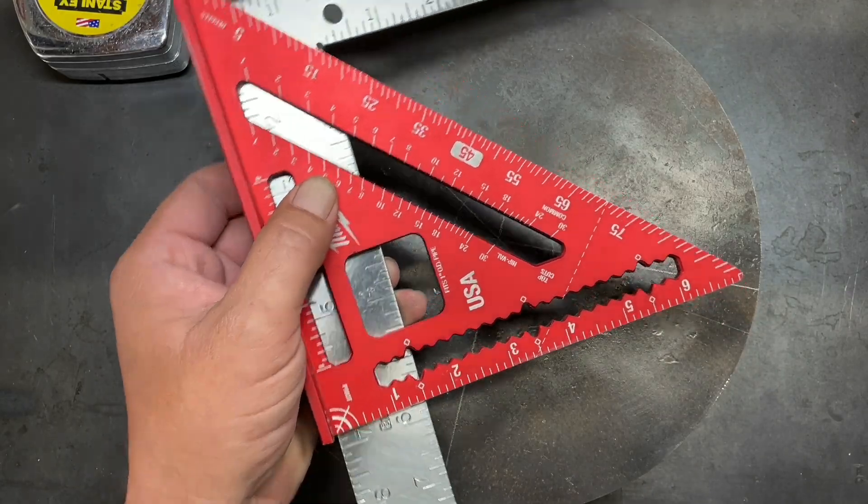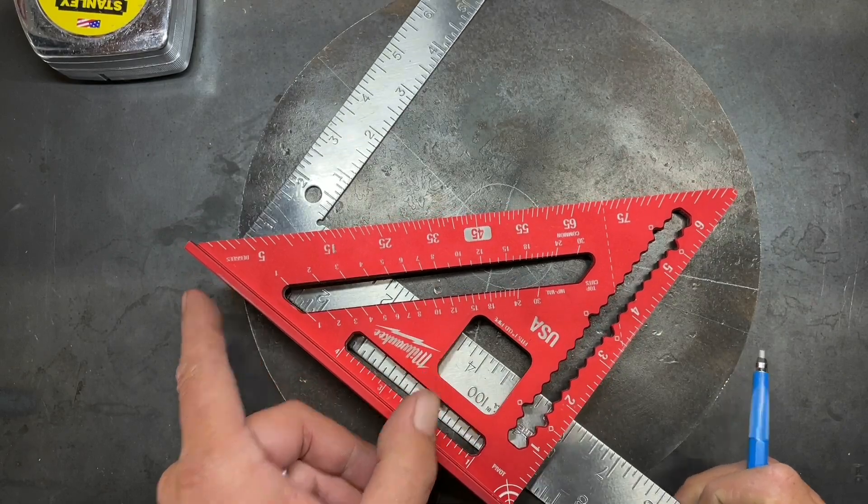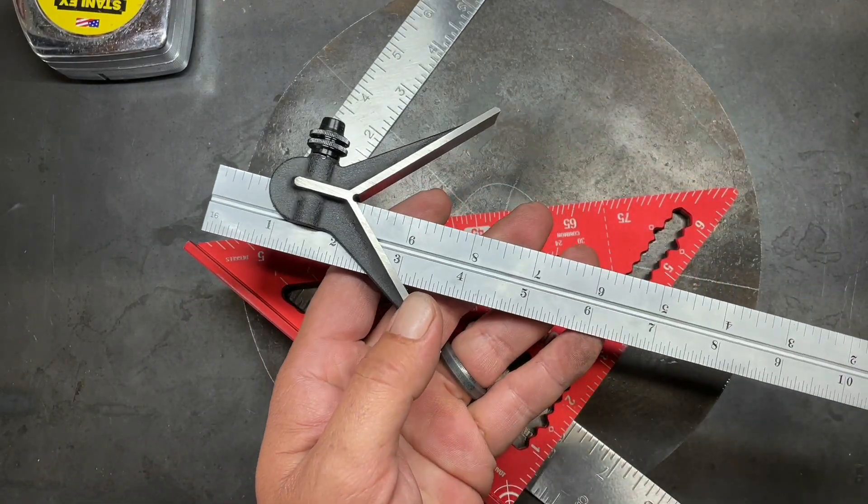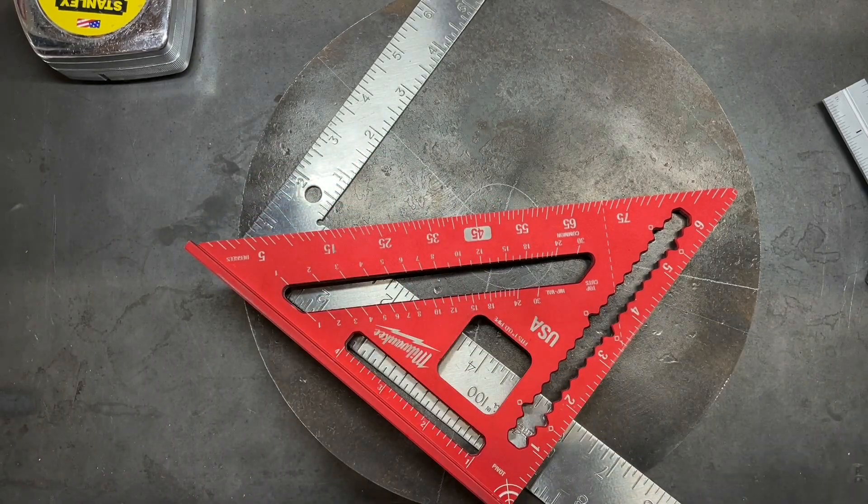You can find the center of a circle with two squares. That's actually, in my opinion, more accurate than the commercial made center finders. I appreciate you watching, and I'll see you in the next one.